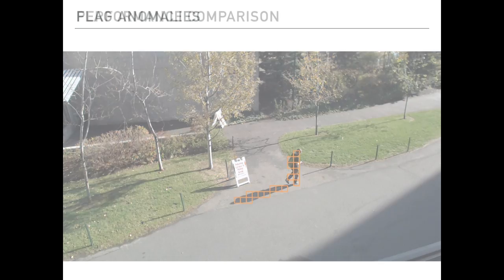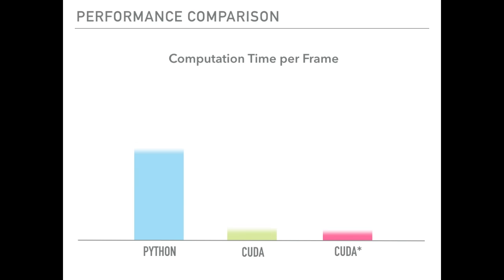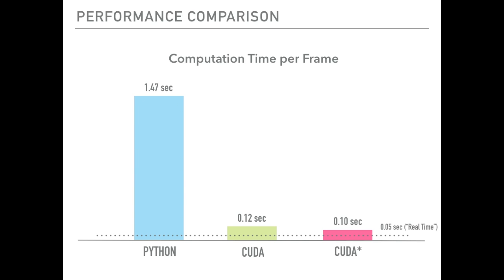We compared computation time per frame between two versions of our parallel code run on the GPU against a serial implementation written in Python. As you can see, while we didn't quite reach our goal of real-time processing, we did see a large speedup.